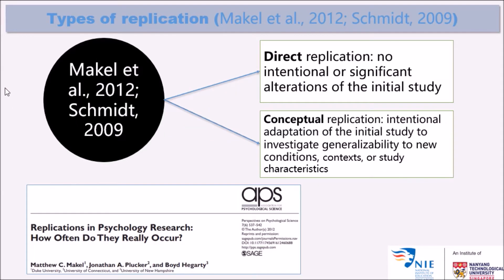The second type of differentiation between replication studies was proposed by Meichel and colleagues in 2012, and a similar one was proposed by Schmidt in 2009. They basically differentiate between two types of replication studies: one is direct replication, and the other one is conceptual replication, which also overlaps with Liken's way of looking at replication research.